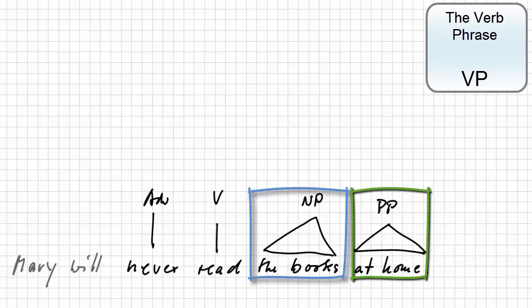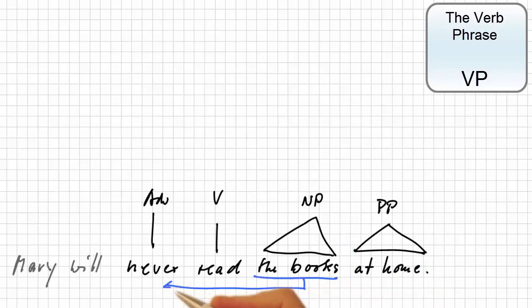That both are constituents can easily be shown. The noun phrase, the books, can be pre-posed, or it can be replaced by the pronoun them. And so can the prepositional phrase, at home, whose pro-form is there, or in an echo question, where.